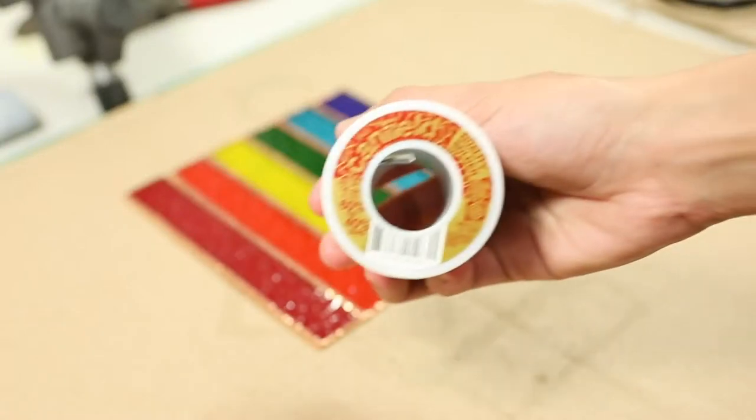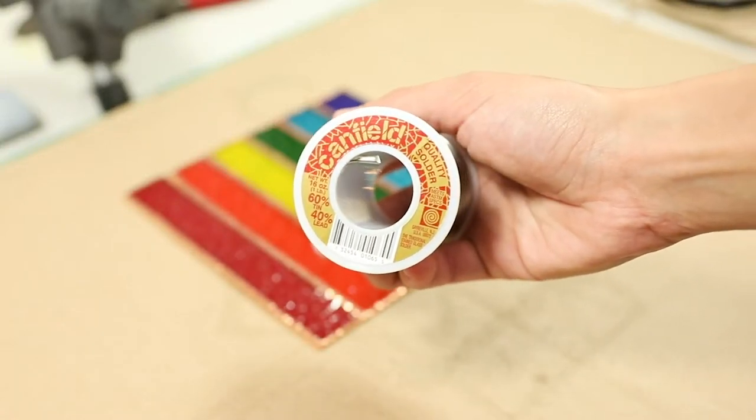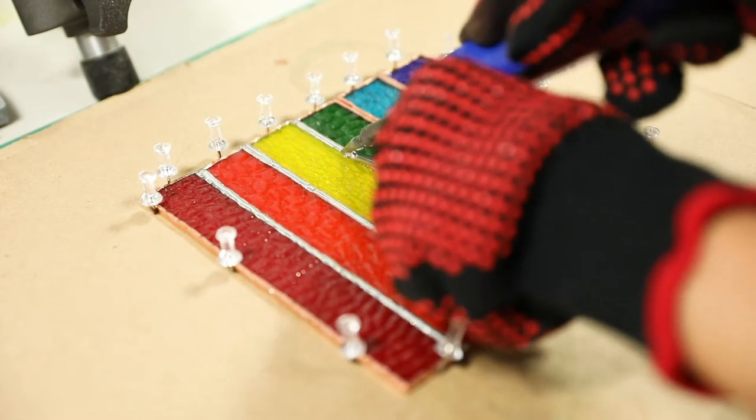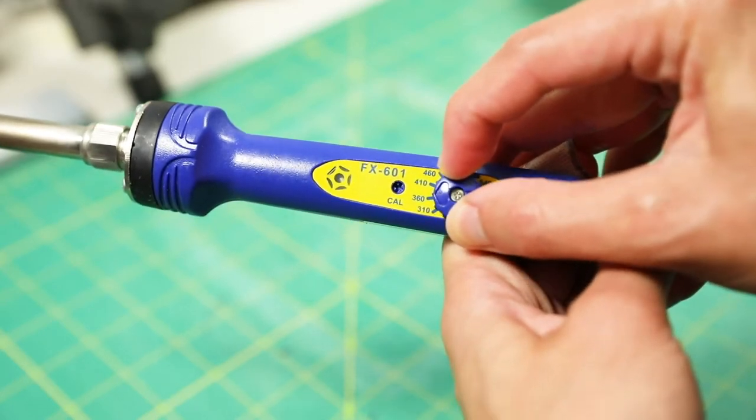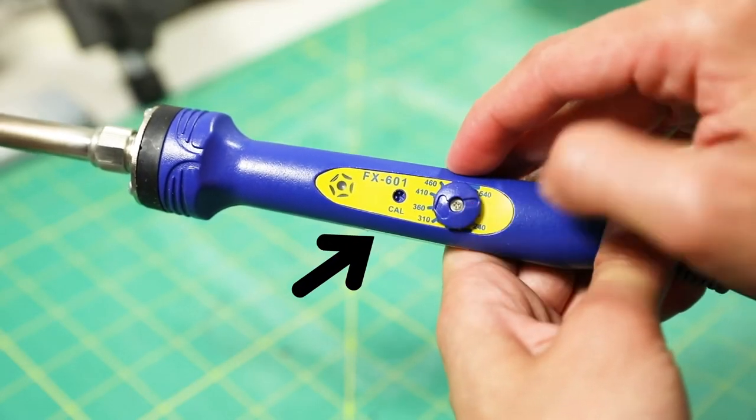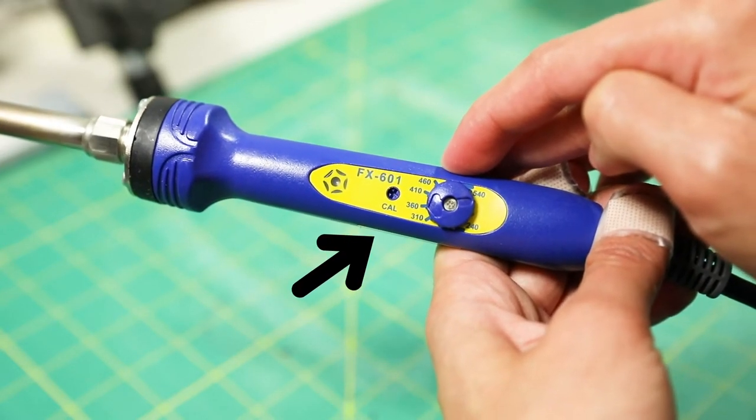Next, you'll need to choose your solder. I'm using 6040 because its melting temperature makes it the best for producing smoother solder seams. Depending on the solder you chose, set your soldering iron to that temperature. If you're using 6040 like me, you can set it to 360 degrees as a starting point.